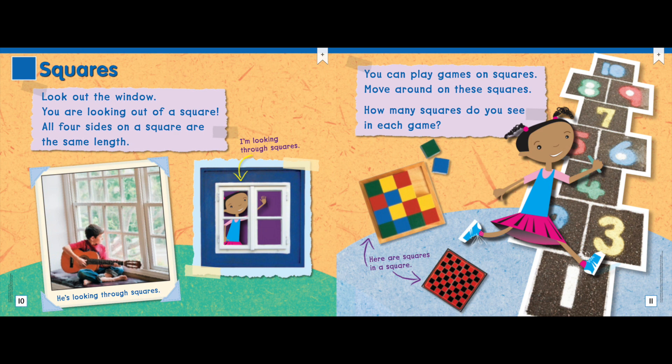Squares. Look out the window. You are looking out of a square. All four sides of a square are the same length. You can play games on squares. Move around on these squares.